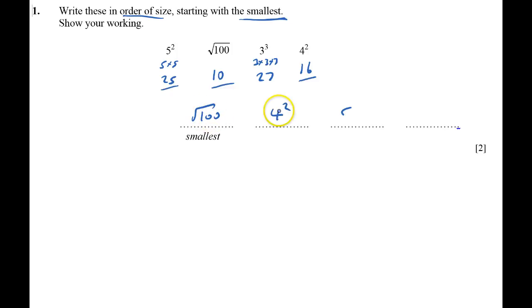The next one's 5 squared. And finally, the largest one is 27, which is 3 cubed. And that's question 1 done.